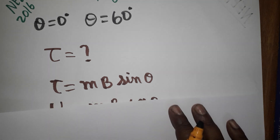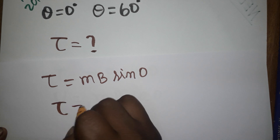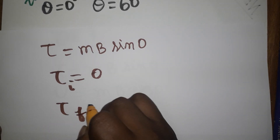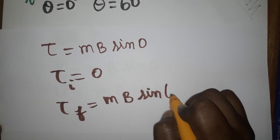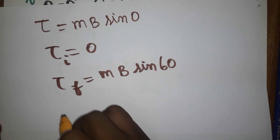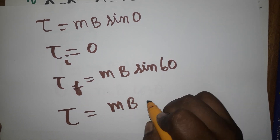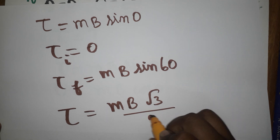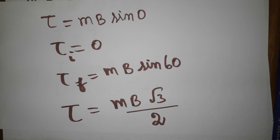First we'll find the torque. Torque initially is MB sin 0°, and sin 0° is zero, so torque is zero at the initial position. For the final position at 60°, torque is MB sin 60°. Sin 60° is √3/2, so the final torque is MB√3/2.